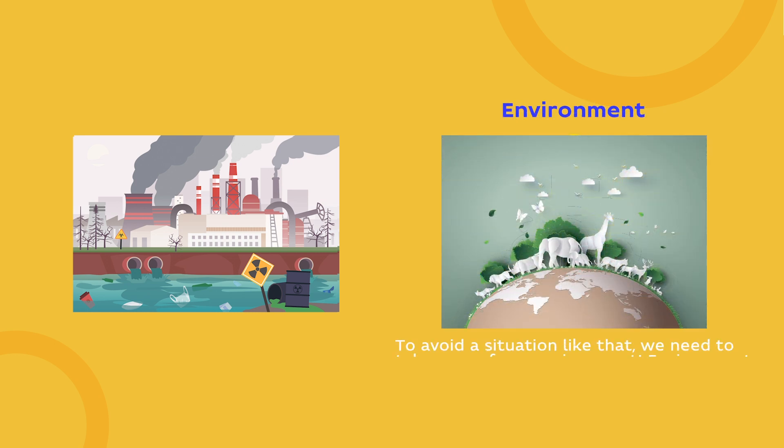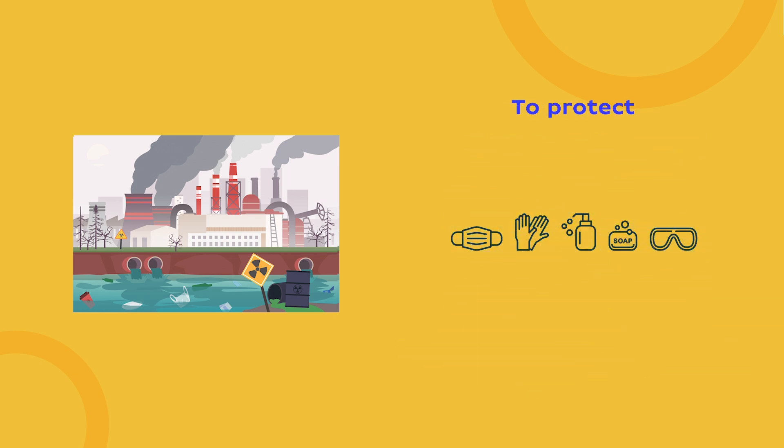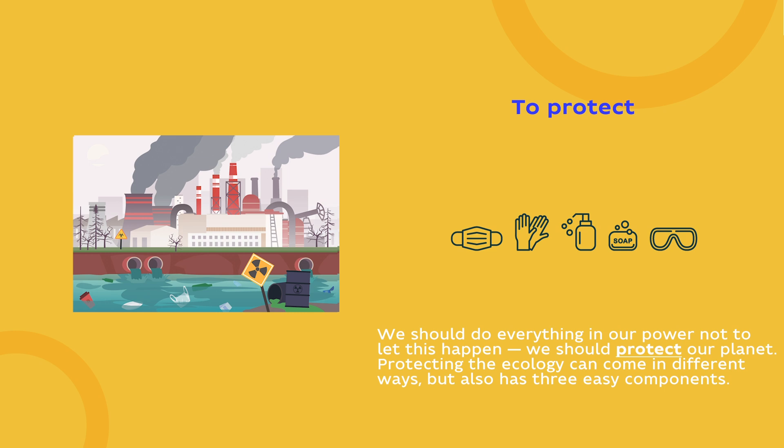Environment — to avoid a situation like that, we need to take care of our environment. Environment is everything that surrounds us, like climate, ground and all the living organisms. To protect — we should do everything in our power not to let this happen. We should protect our planet. Protecting the ecology can come in different ways but also has three easy components.